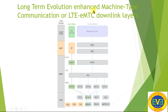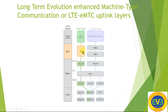LTE-eMTC downlink layers include the physical layer, MAC layer, network layer, and higher layers. These different layers are shown in the diagram.